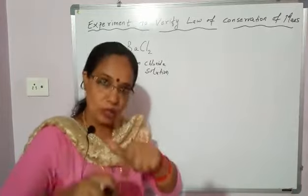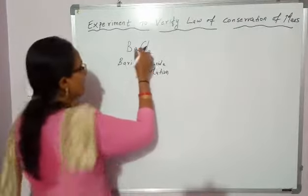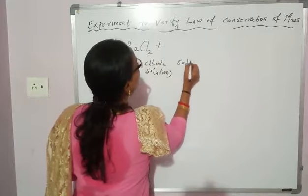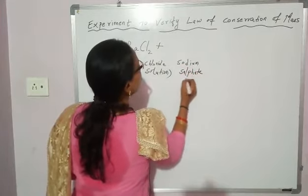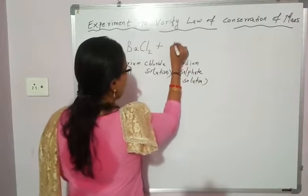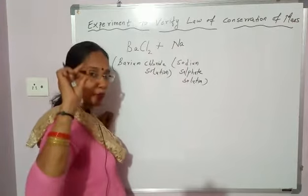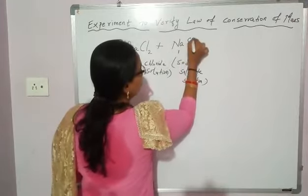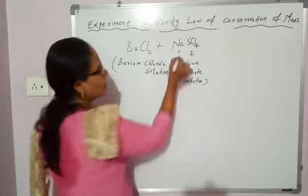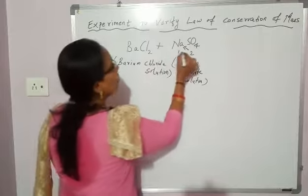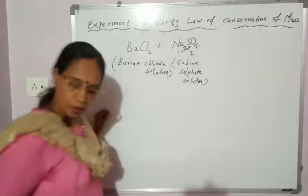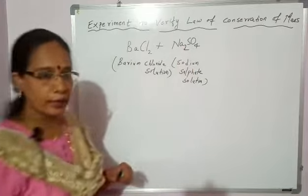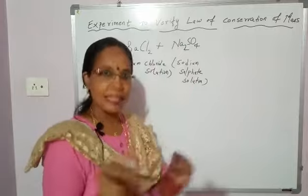Aqueous means dissolved in water — the solid is dissolved in water. Barium chloride solution is mixed with sodium sulfate solution. Sodium: Na, capital N small a. The valency of sodium is 1. Sulfate formula is SO₄ and its valency is 2. You cross-multiply: 2 will go with Na, so you write Na₂; 1 will go with SO₄, so no need to write 1 — it is understood. The formula of sodium sulfate is Na₂SO₄. This is also an aqueous solution.